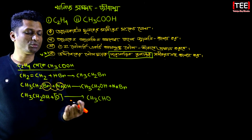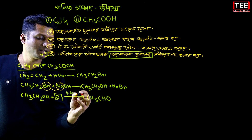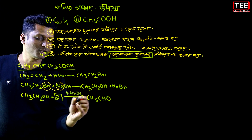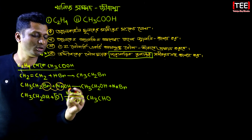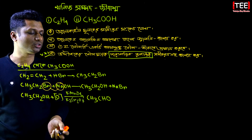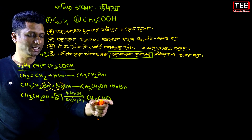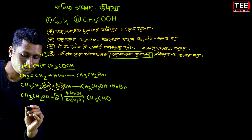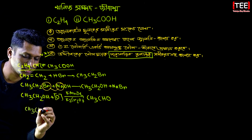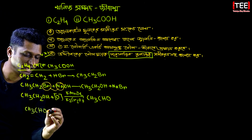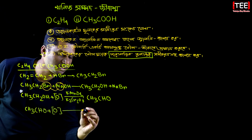This uses Potassium Permanganate (KMnO₄) or Potassium Dichromate (K₂Cr₂O₇) as oxidizing agents. The product is CH₃CHO (ethanal), formed through controlled oxidation.